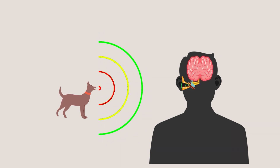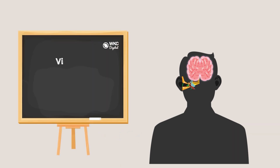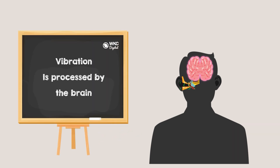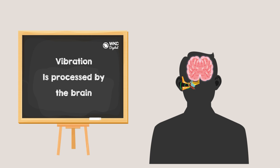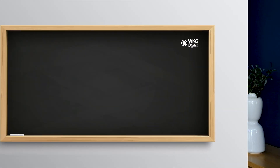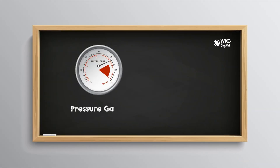When these waves reach a human ear, this vibration is then processed by the brain, leading to the perception of sound. There are two properties of sound that are used to measure loudness or intensity. These properties are pressure and power.